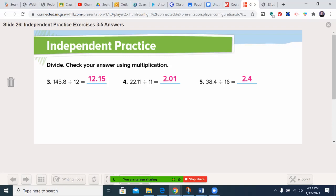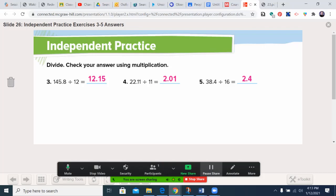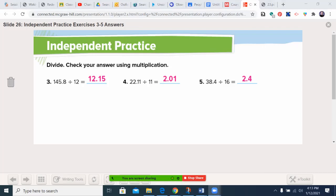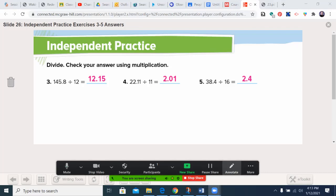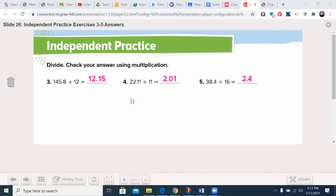Welcome back. Let's see how you did. 145.8 divided by 12 is 12.15, which I believe 12 times 12 is 144. So, that puts us right in that area. 22.11 divided by 11 is 2.01. And you know what? I want to talk. We didn't talk about that one. But I'm going to.